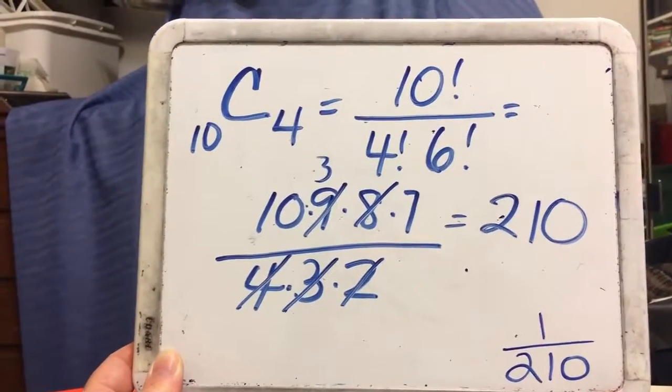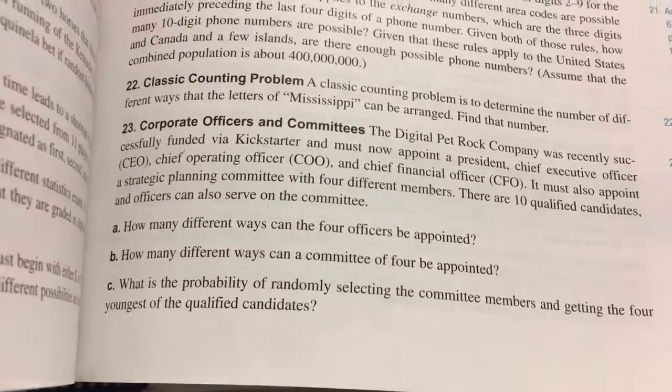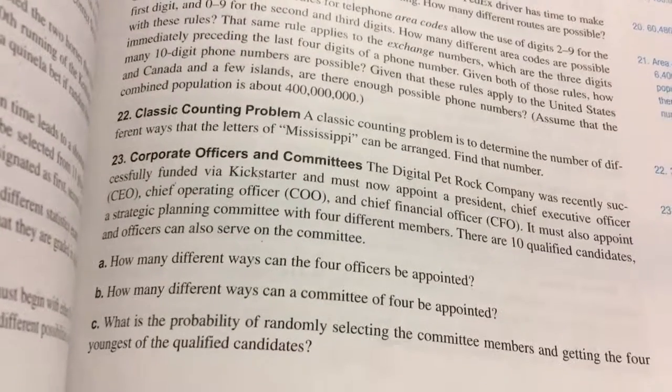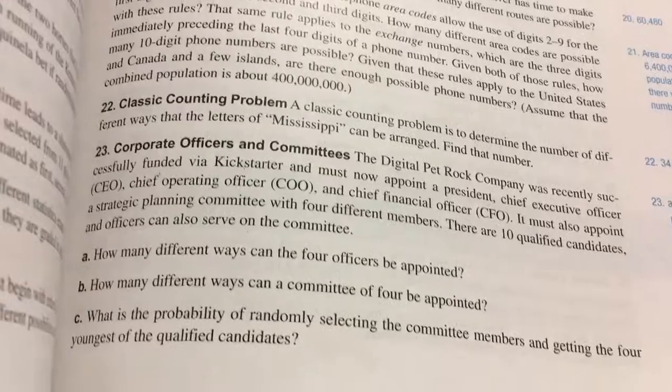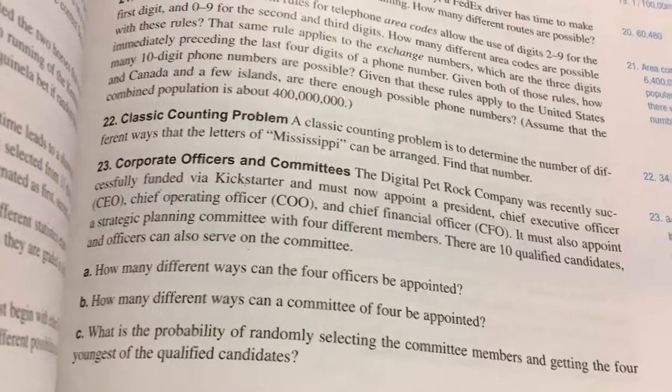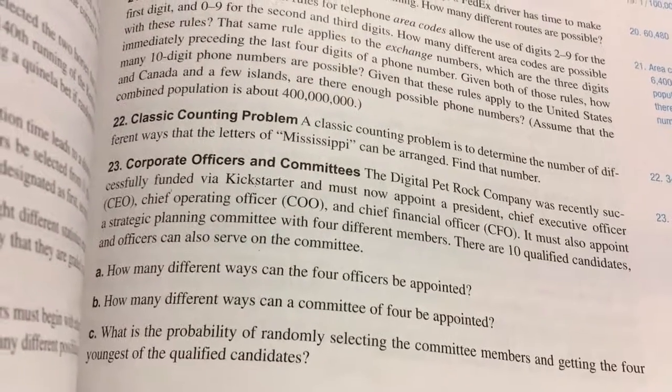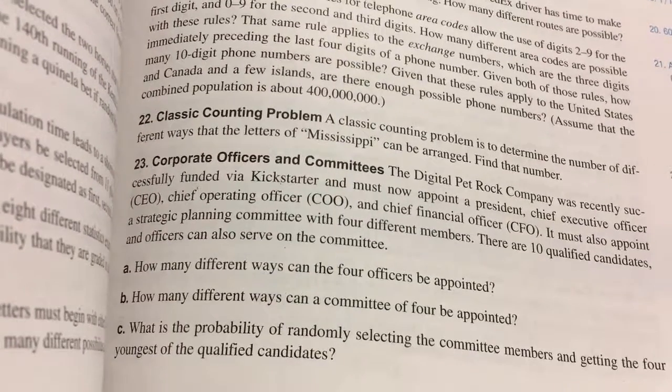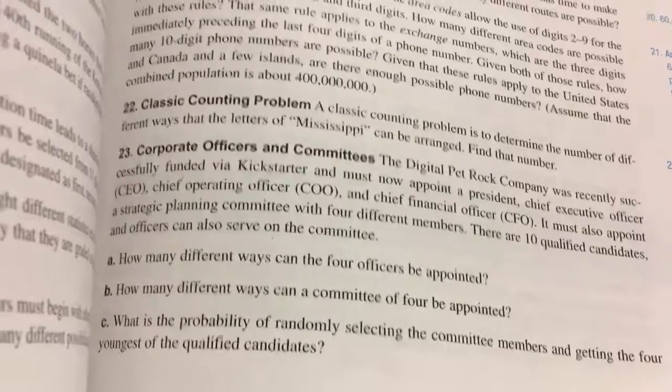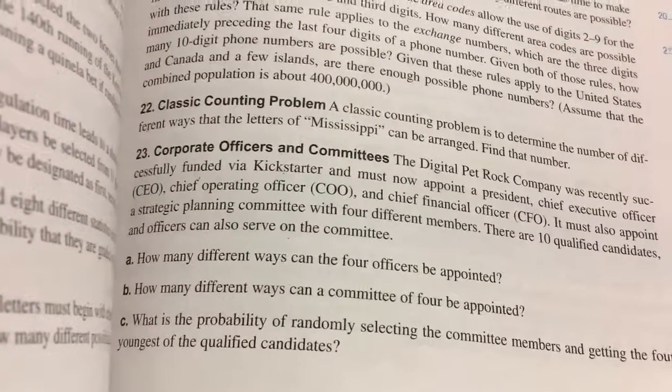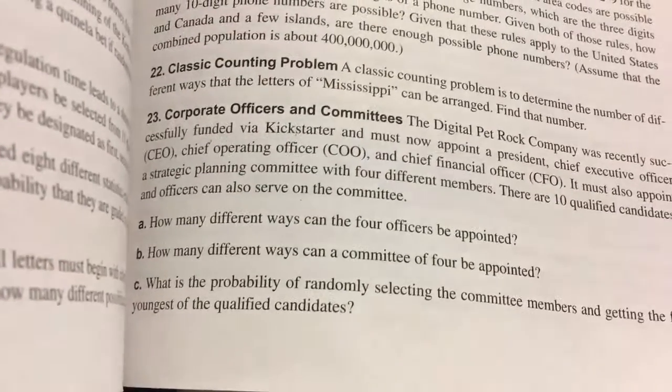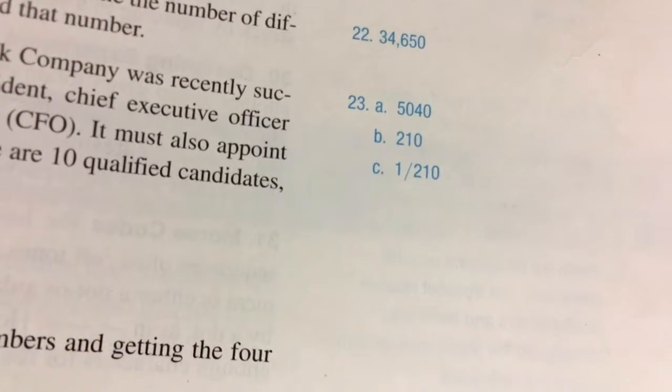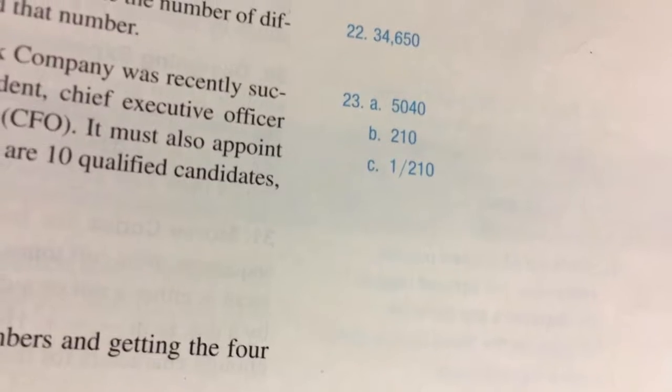The last question says, what is the probability of randomly selecting the committee members and getting the four youngest of the qualified candidates? We're talking about a committee, and it doesn't matter which way we choose them. We've already done how many ways you can select a combination for the committee, and there's only one way to get the four youngest candidates. Since there were 210 ways to get a committee, then 1 divided by 210 would be the answer for the C portion here. And we are done with problem set 4.4.